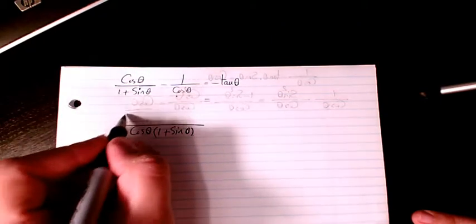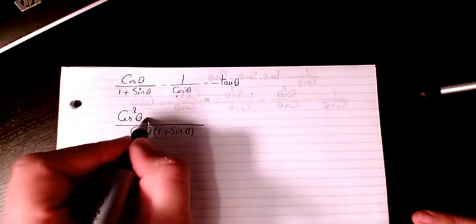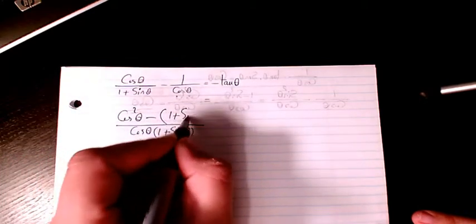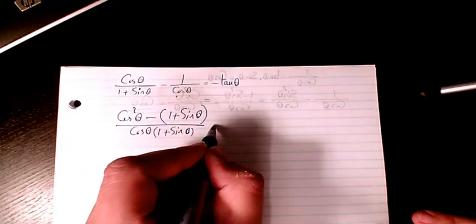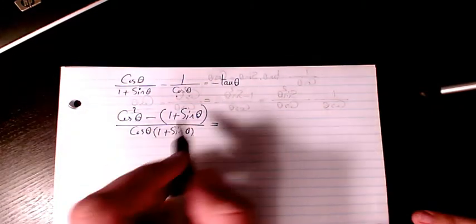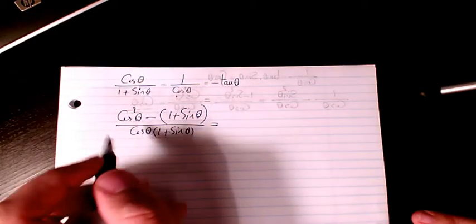Then I will have cosine squared theta minus 1 plus sine theta in the numerator.